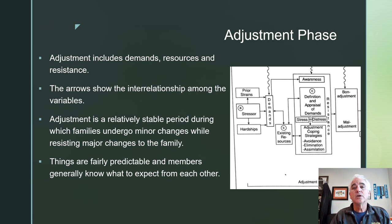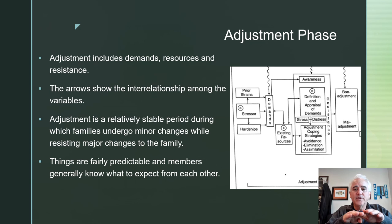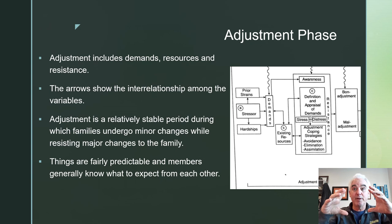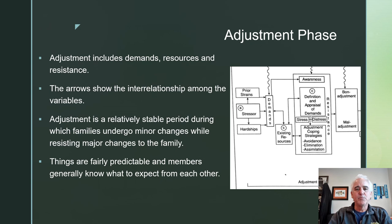Then the coping or adjustment strategies that the family has. At this point, they either adjust well — bond adjustment — or adjust poorly — maladjustment. This adjustment phase is a relatively stable phase during which families undergo minor changes while resisting major changes. In the adjustment phase, they don't want to make major adjustments. A family system is in homeostasis and resists change. Something major needs to happen to make change happen. Things are fairly predictable and members generally know what to expect from each other.